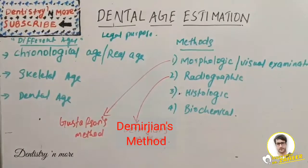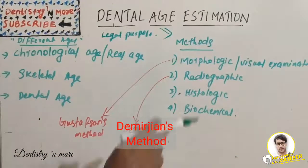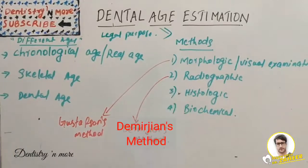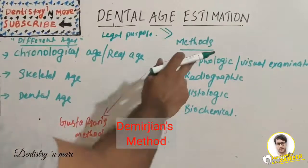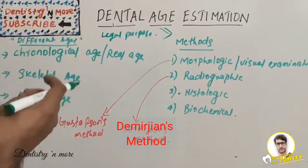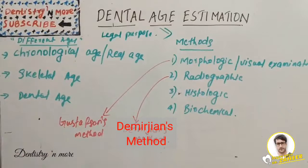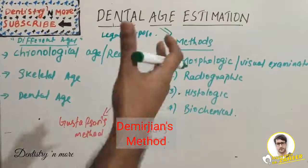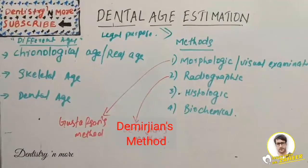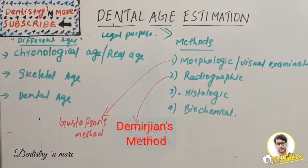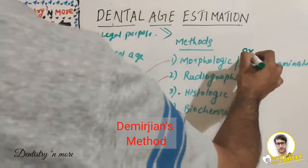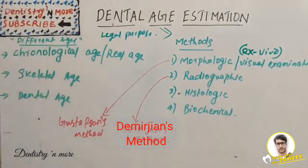We have a few methods for dental age estimation: morphologic or visual examination, radiographic examination, histologic examination, and biochemical examination. The morphologic or visual examination is based on assessment of teeth - that is, ex-vivo measurement - in a living person. These methods require extracted teeth for microscopic preparation, but may not be acceptable due to ethical, religious, cultural, or scientific reasons.